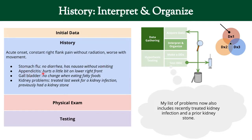What about appendicitis? The appendix is on the right lower side of the abdomen, so we asked if it hurts there, and they said maybe a little. What about gallbladder? The gallbladder pain worsens with fatty foods, so we asked about that and they said no. And for kidney problems, the patient said yes — she had a kidney infection last week for which she was taking antibiotics, and in the past she had a kidney stone. Notice how we ask questions specific to each item on our differential.